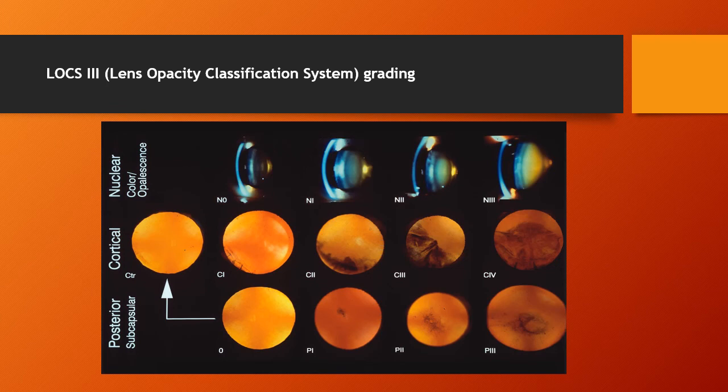The LOCS III classification — that is the Lens Opacity Classification System — grades into three types, according to the type of cataract and stage of maturation: nuclear, cortical, and posterior subcapsular cataract. Nuclear cataract, depending on the color of the nucleus, is graded N0, 1, 2, 3; cortical is graded 1, 2, 3, and 4; and posterior subcapsular cataract into P1, P2, and P3.